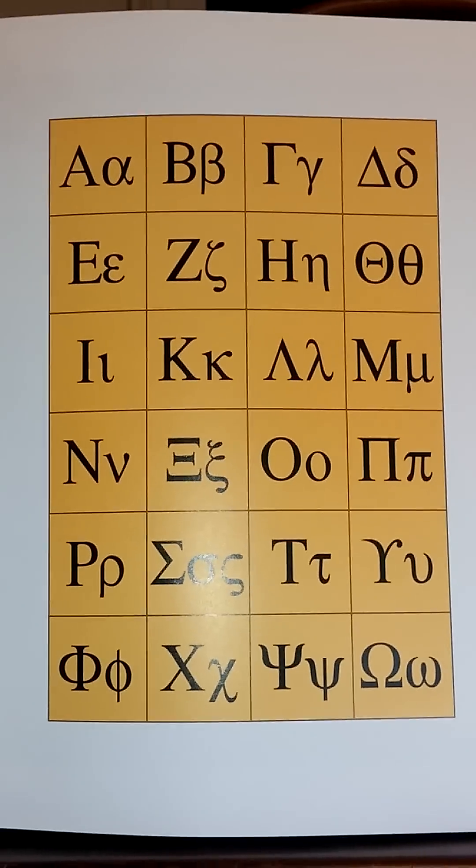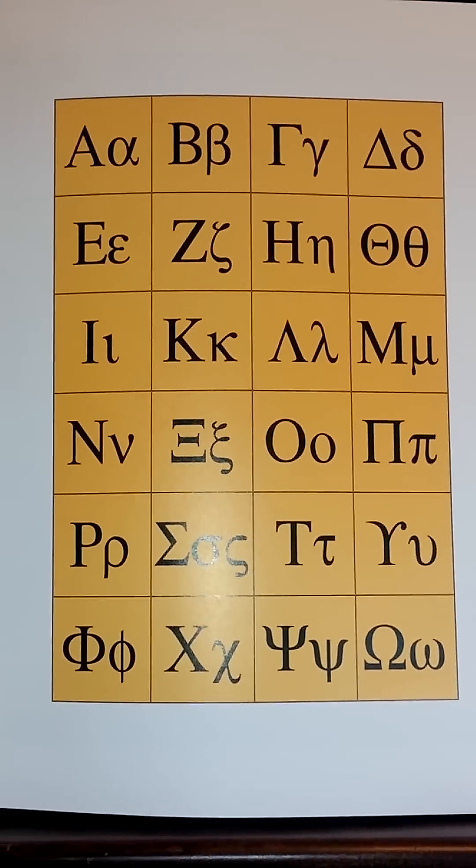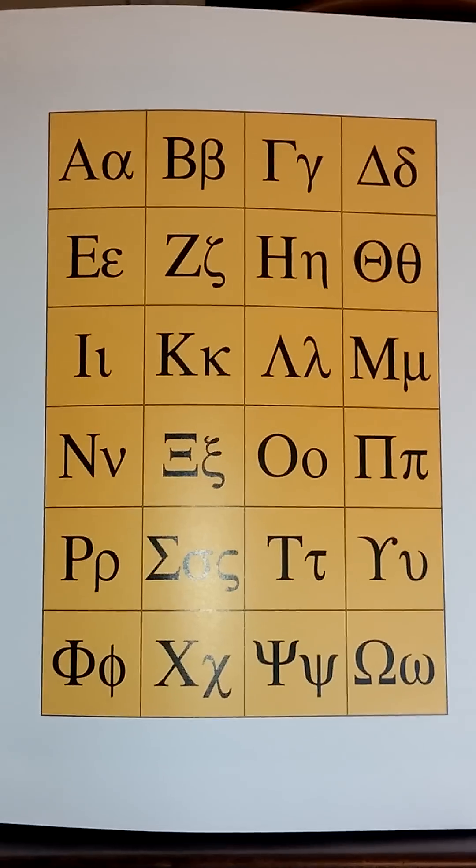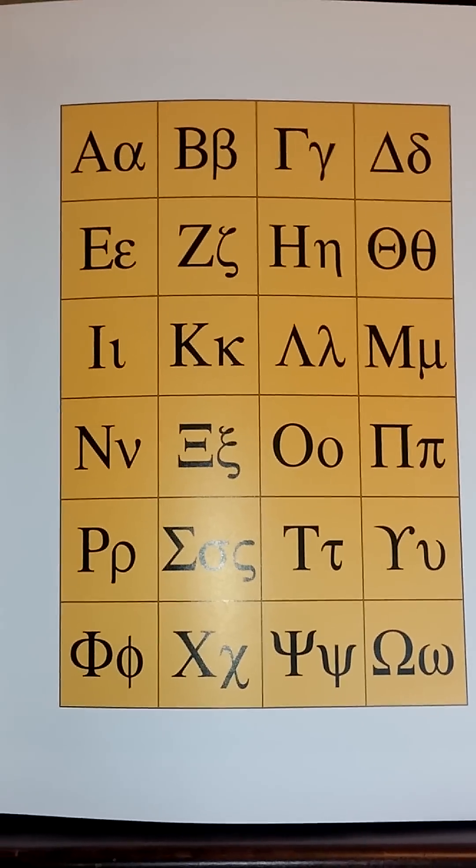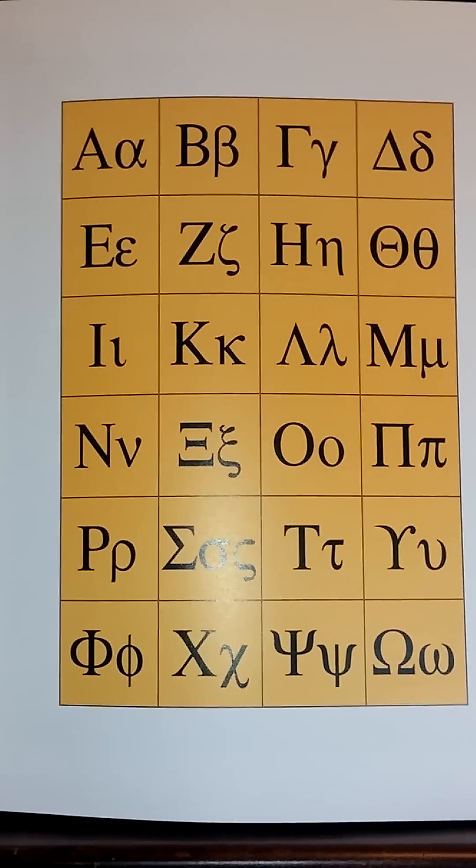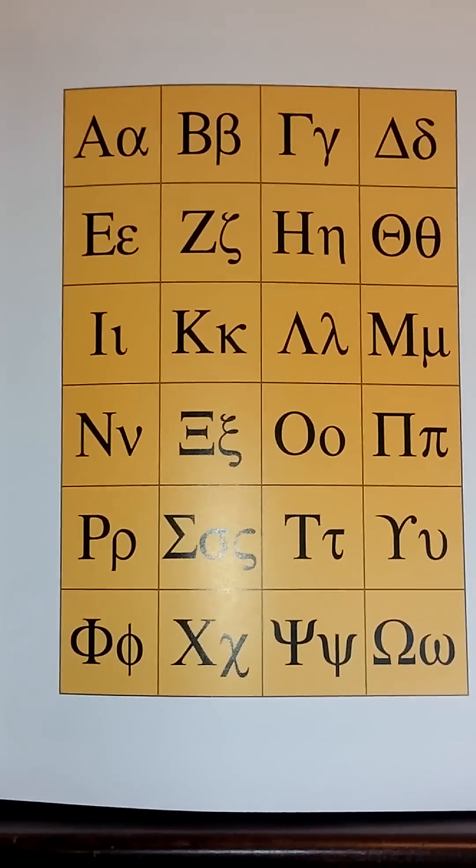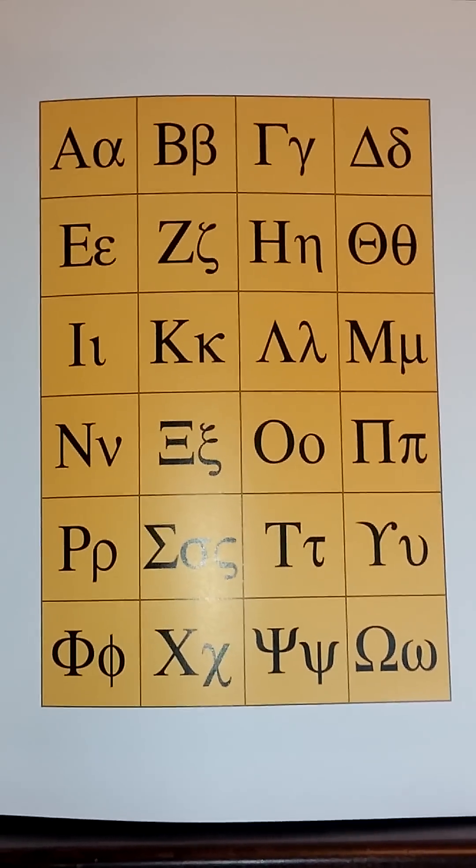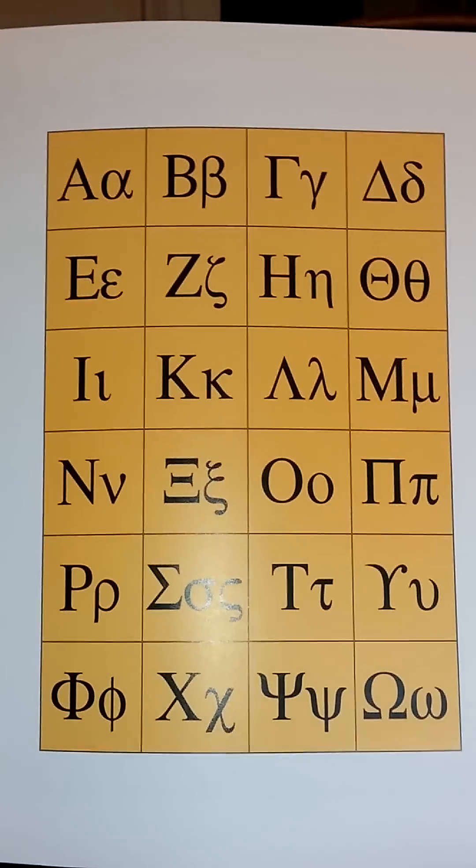But if you learn the song by heart, by ear, as a child can do who doesn't even know how to read yet, English or Greek, that child can then identify the letters by singing the song and pointing to the different squares. So I'm going to demonstrate that. Here's how it goes.